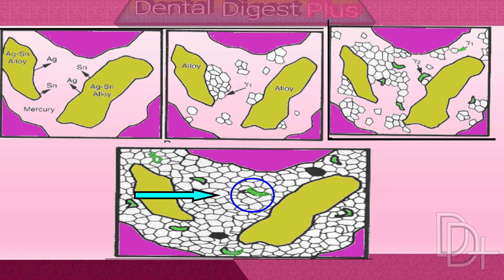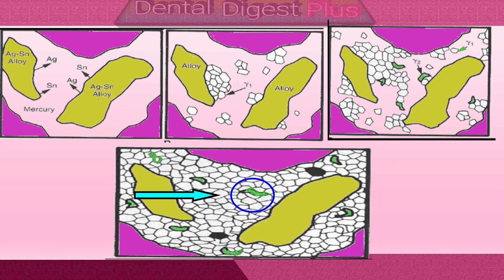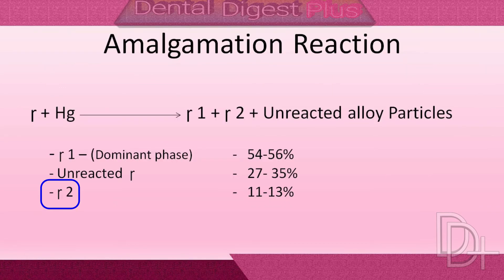The weakest component is the gamma-2 phase; the hardness of gamma-2 is approximately 10% of the hardness of gamma-1. This phase is also the least stable in a corrosive environment and may suffer corrosion attack, especially in crevices of the restorations. In general, gamma and pure gamma-1 phases are stable in an oral environment. However, gamma-2 in amalgam does contain small amounts of tin, which can be lost in a corrosive environment.